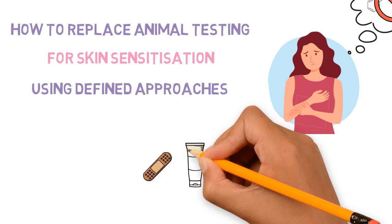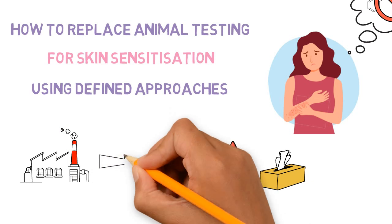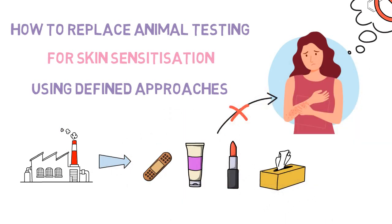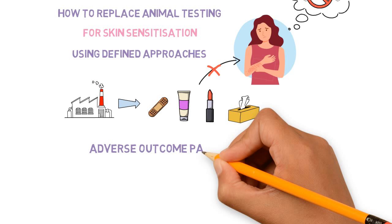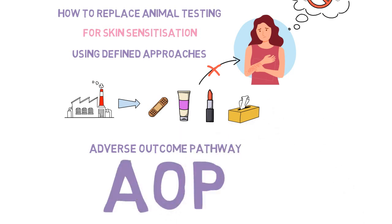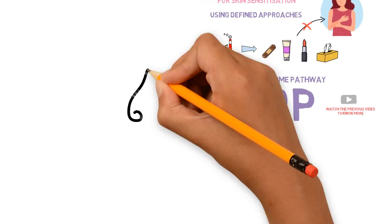Our skin can be often exposed to cosmetics, personal products, or even drugs, and so the industry producing these products needs to ensure that they will not cause skin sensitization. But how can they be sure of that? We can answer this question by understanding the adverse outcome pathway, or AOP, for skin sensitization.